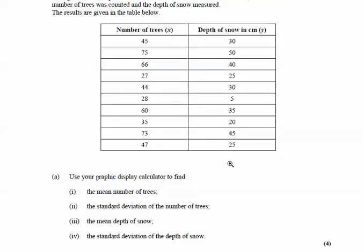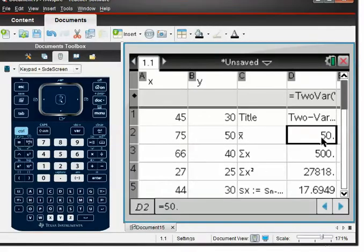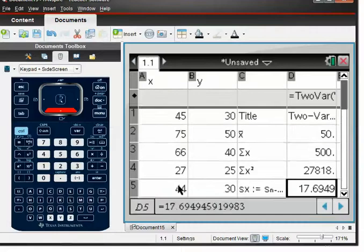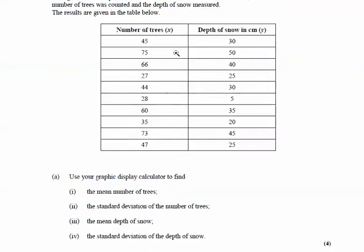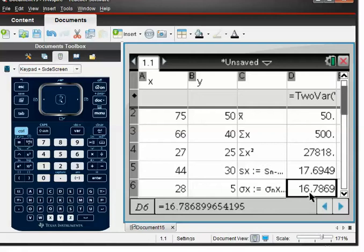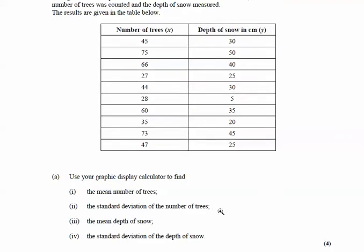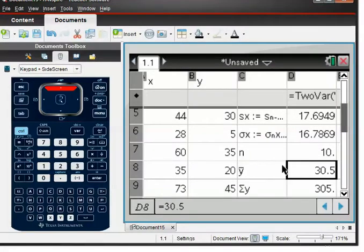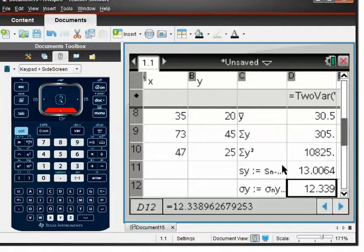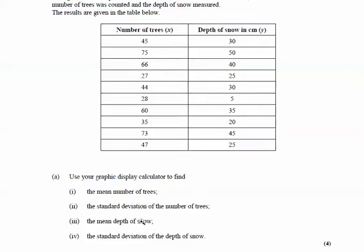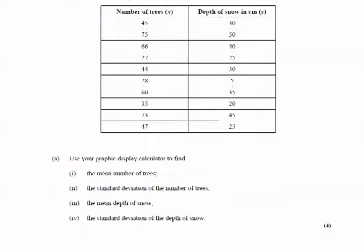It tells us the mean number of trees: x is the number of trees, so x̄ is the mean number of trees, and that's 50. The standard deviation of the trees — looking at variable x — σx is 16.8. Then it wants the mean depth of snow: the depth of snow is variable y, so ȳ is 30.5. And the standard deviation of the depth of snow, σy, is 12.3.